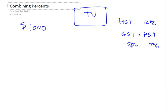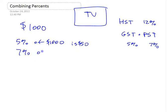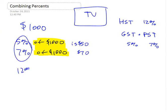The two taxes separately: GST would be 5% of $1,000, which is $50. And 7% of $1,000 is $70. Those two amounts are percentages of the same thing — this is the key here. They're both percentages of $1,000, so you could just lump them together and say, I can just do 12% of $1,000 instead.